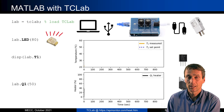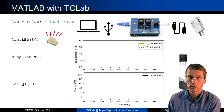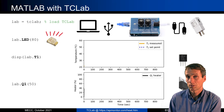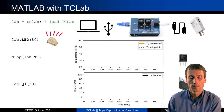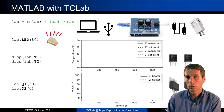Here are some commands with MATLAB to connect to the lab. Lab equals TCLab. We turn on the LED to 80, display the current temperature, and adjust the heater to 50 percent. Those are the syntax instructions given to students right at the beginning. It's fairly easy to connect and read a temperature or control the heater. With two heaters and two temperature sensors, it's just Q1 and Q2 for the two heaters and T1 and T2 for the two temperatures.